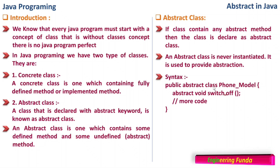For example, we have a class declared as: public abstract class Phone_Model. This class is declared as abstract. Inside it, there is one abstract method called switch_off, with a return type of void. Since it is declared as abstract, you can see that there is no body of this method.